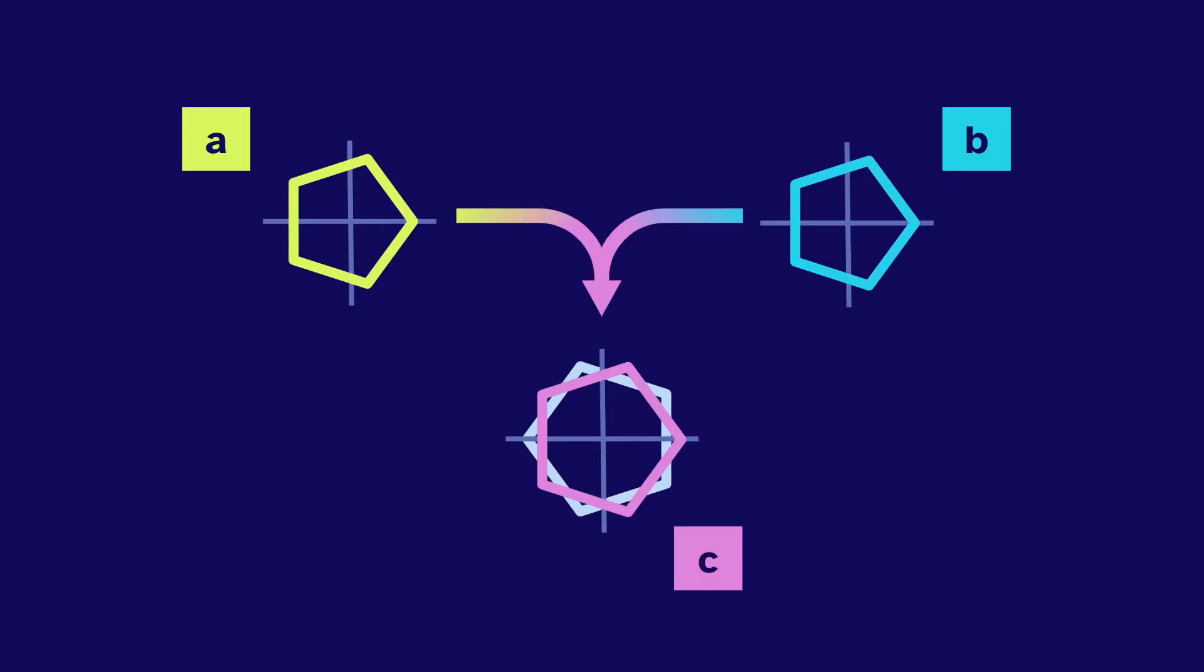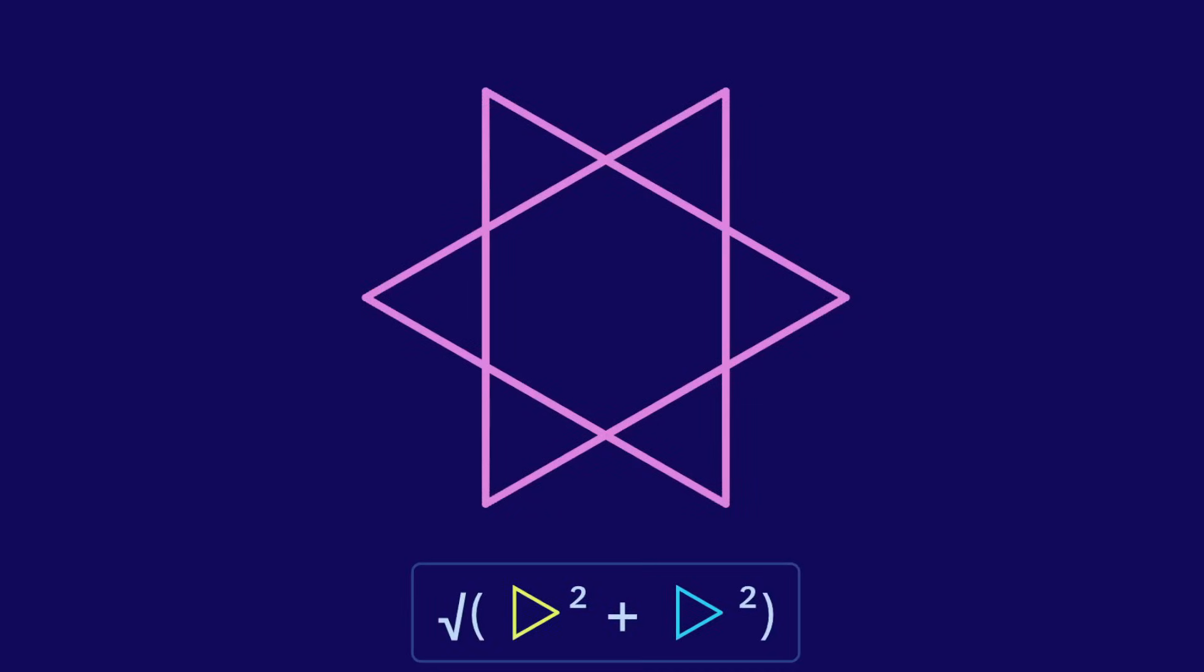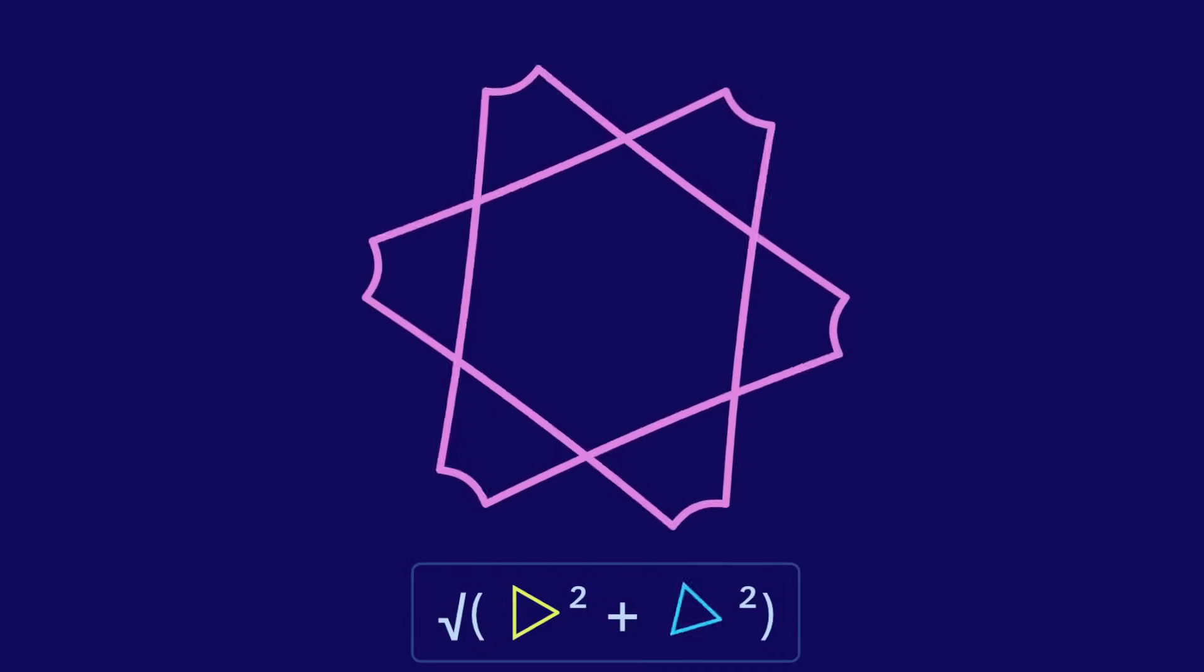So this is the result for pentagons, and hexagons, and heptagons, and octagons. I'm bored. Let's go back to the triangles and make one of them rotate. Nice.